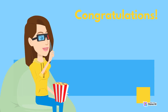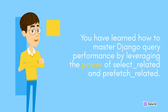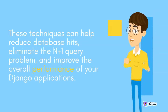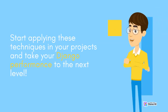Congratulations! You have learned how to master Django query performance by leveraging the power of select_related and prefetch_related. These techniques can help reduce database hits, eliminate the N+1 query problem, and improve the overall performance of your Django applications. By using select_related for foreign key relationships and prefetch_related for many-to-many and many-to-one relationships, you can optimize your queries and achieve lightning-fast results. Start applying these techniques in your projects and take your Django performance to the next level.